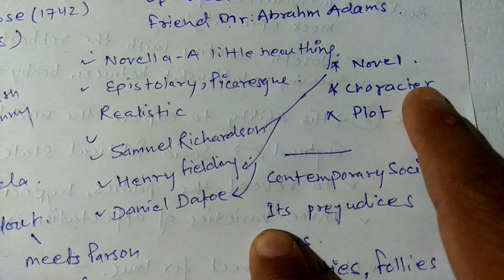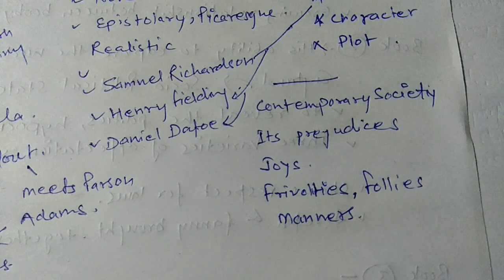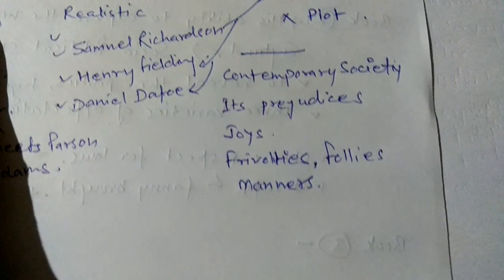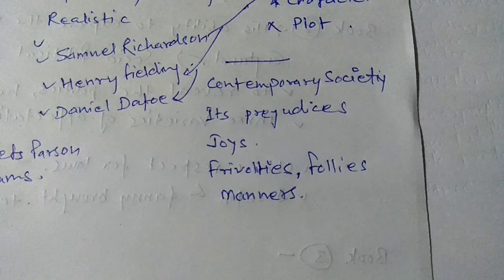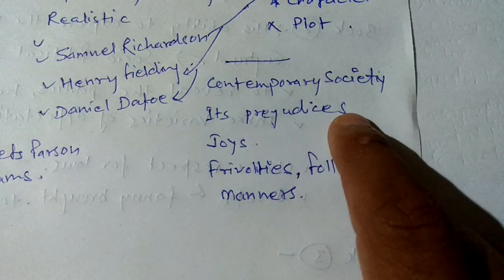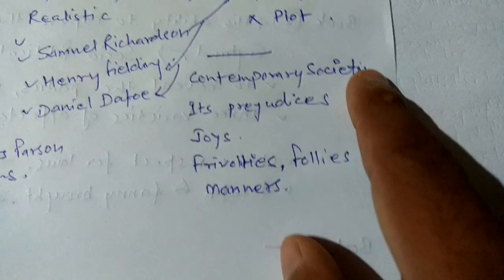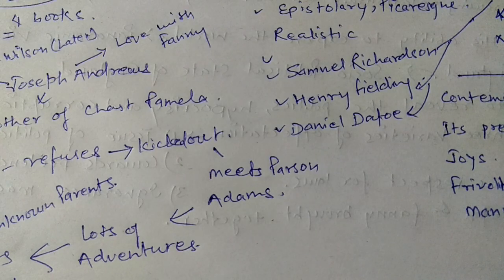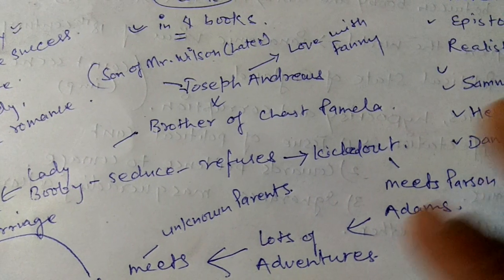When we are talking about a novel, we need to know about characters and plot very well. What makes a particular work important is the reason behind it — it describes best the contemporary society, its prejudices, joys, rivalries, follies, and manners. If it represents contemporary society best, the work becomes the best, like Canterbury Tales.